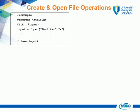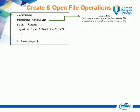We start with the example. First, the header file. In C programming, some of the functions for file processing are available in the stdio.h header file. Students may use any header file when necessary.